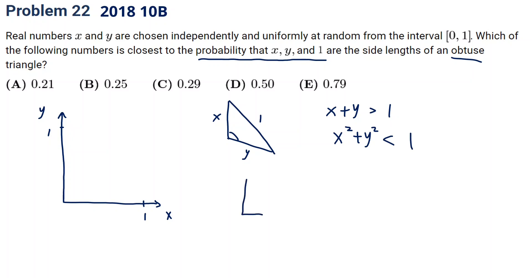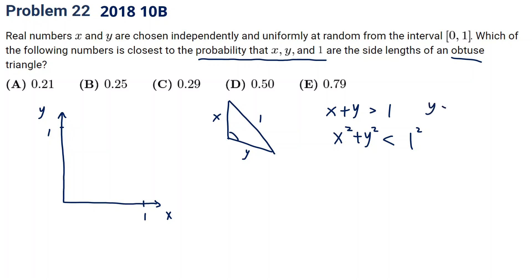This is like a Pythagorean relationship. When we have a right triangle, x squared plus y squared equals 1. But for an obtuse triangle, x squared plus y squared is smaller than 1 squared. This is the second condition many people may not realize. So now we have two conditions: first, x plus y greater than 1, which is the same as y greater than 1 minus x.